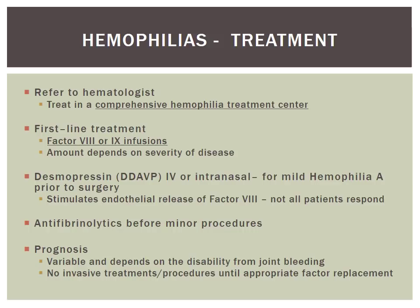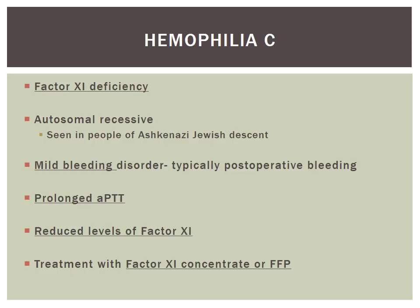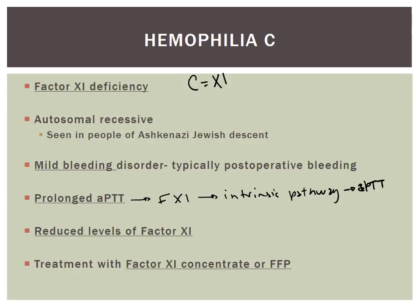Hemophilia C is a factor XI deficiency — if you see C, think factor XI. This is autosomal recessive with mild bleeding, usually only after post-operative issues. Patients have a prolonged APTT because factor XI is part of the intrinsic pathway tested by the APTT. Treatment is with factor XI concentrates or fresh frozen plasma, which contains factor XI.